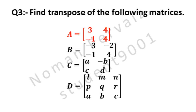Question number 3 is: find the transpose of the following matrices. Matrix A has 4 elements which are 3, 4, minus 1 and 4. Matrix B has 4 elements which are minus 3, minus 2, minus 1 and 4.